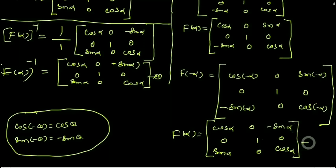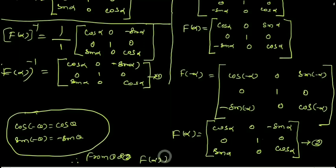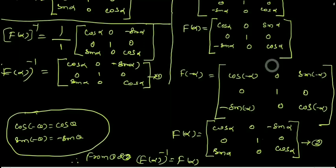So this gives the second equation. Therefore from equation 1 and equation 2 they are equal: f of alpha inverse equals f of minus alpha. Thanks for watching.